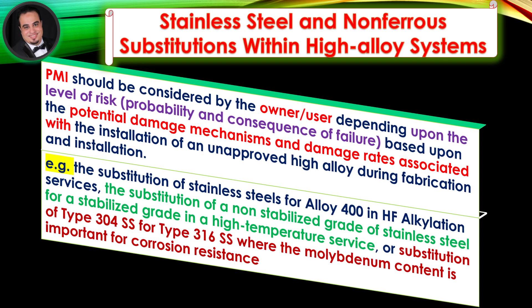Stainless Steel and Non-Ferrous Substitutions within High-Alloy Systems: Positive Material Identification should be considered by the owner-user depending upon the level of risk, probability, and consequence of failure based upon the potential damage mechanisms and damage rates associated with the installation of an unapproved high-alloy during fabrication and installation. Examples include the substitution of stainless steels for Alloy 400 in hydrofluoric acid alkylation services, the substitution of a non-stabilized grade of stainless steel for a stabilized grade in high-temperature service, or substitution of Type 304 stainless steel for Type 316 stainless steel where the molybdenum content is important for corrosion resistance.